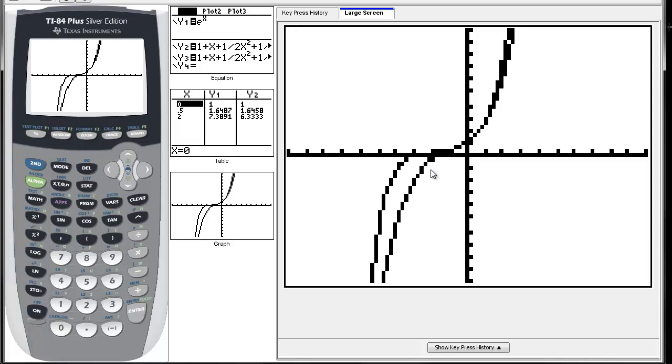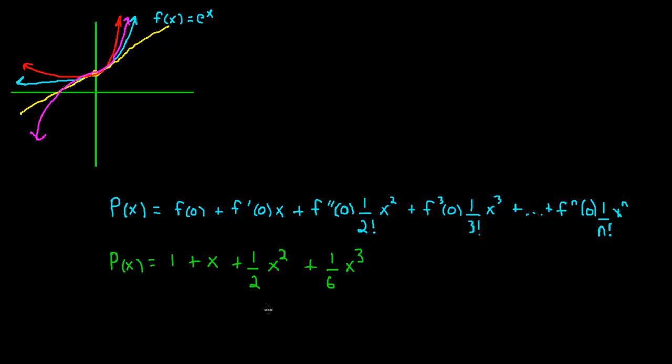If we continue to add terms, this little wing of the polynomial is going to get pushed further over. We're going to really look like e^x in this general vicinity. If we go far enough to the left and right, it might get off a little bit, but close to zero it's going to be really accurate. So there you go - a Maclaurin polynomial for e^x and a little calculator work. I hope that helped. We'll see you in the next video.